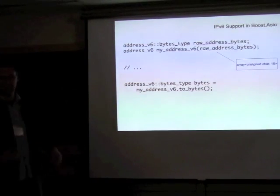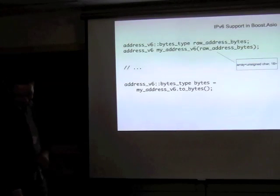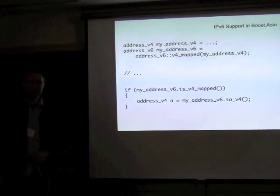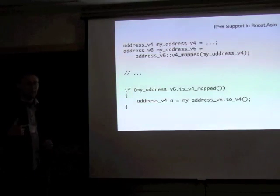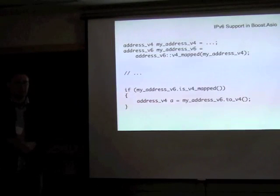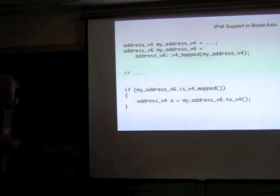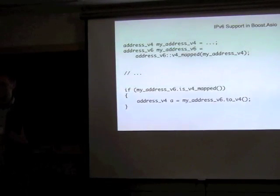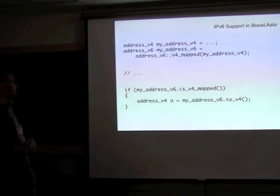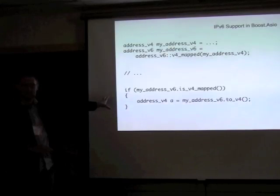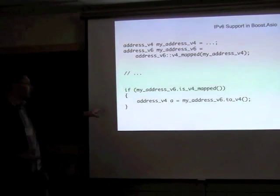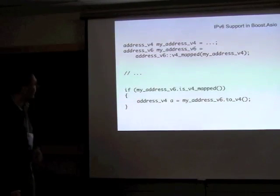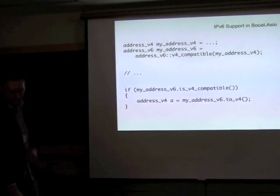If you need the opposite conversion, to_bytes is available as well. Although I've rarely seen a use for this in practice, there is a facility for creating v4-mapped addresses and v4-compatible addresses — these are ways of representing IPv4 addresses in an IPv6 format. These classes let you both test whether an address is of that class and perform the conversion in either direction.